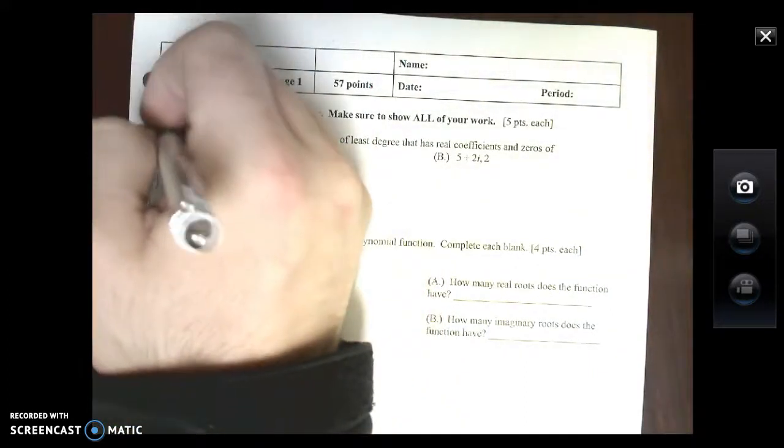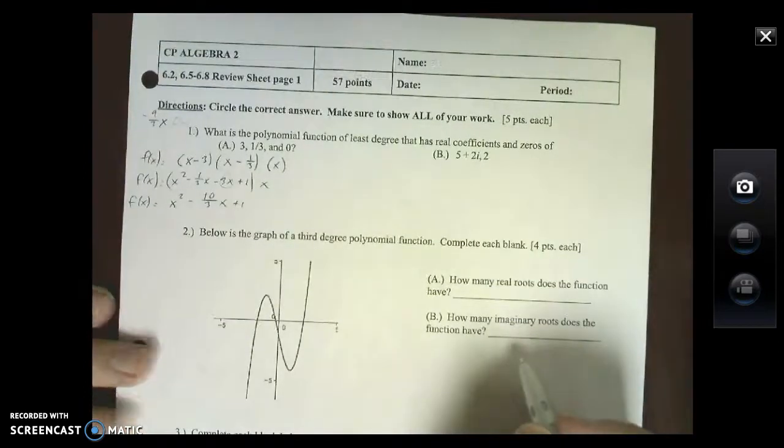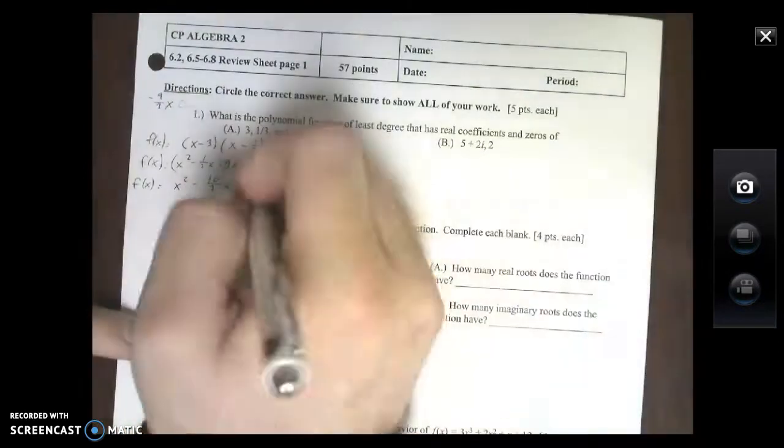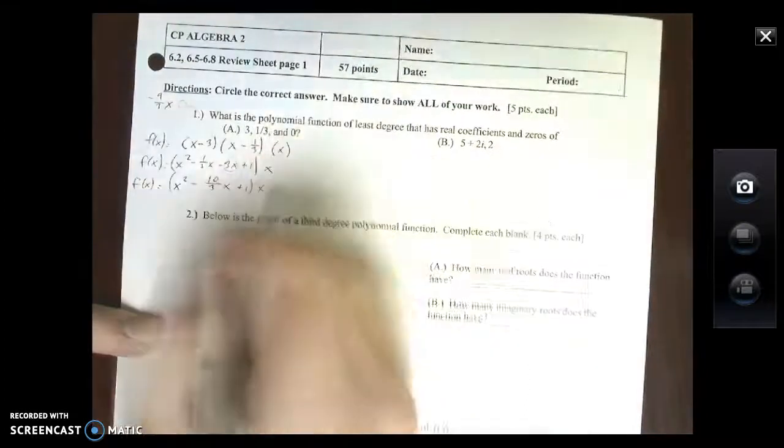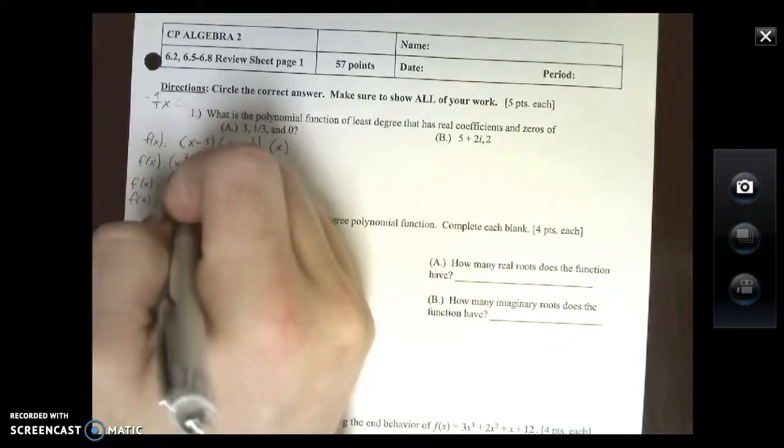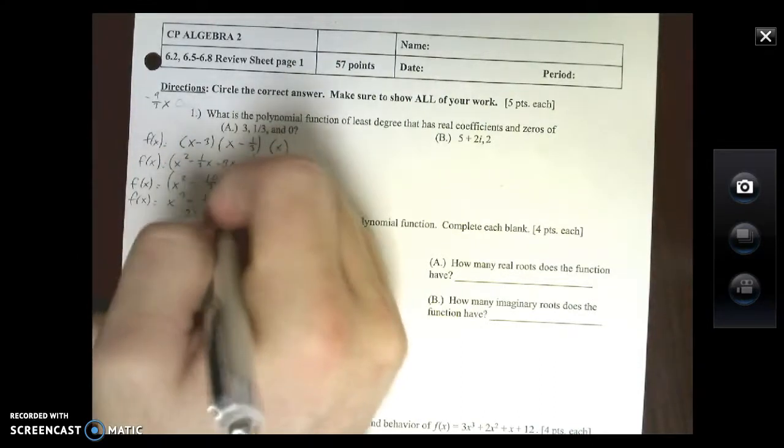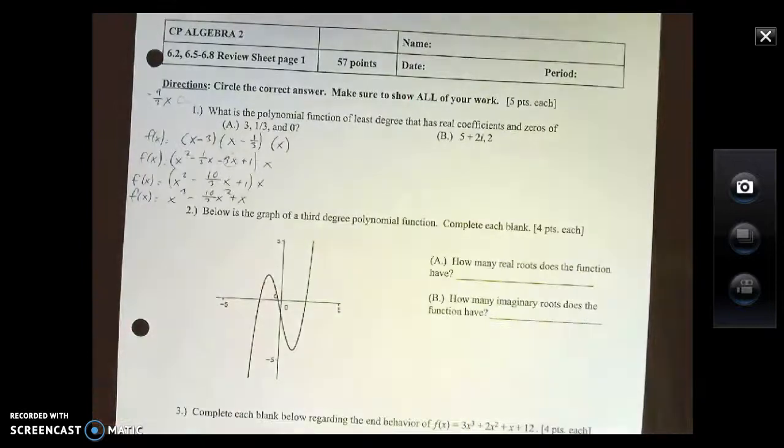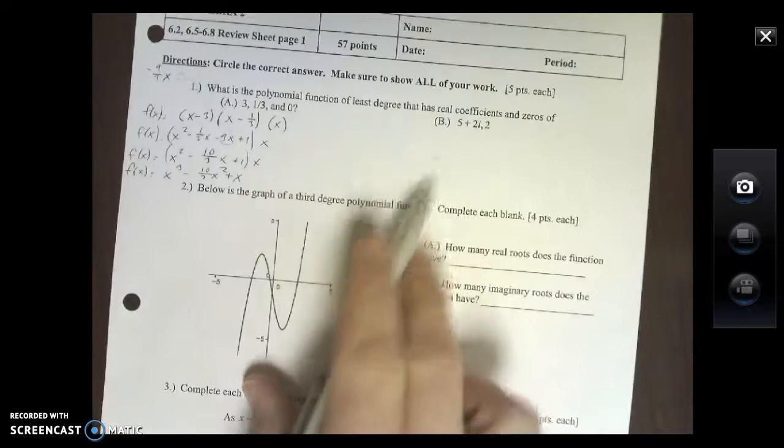I just converted this to negative 9/3 X and then you add them, negative 10/3, and all of that being multiplied by X. Now I can multiply this through: X cubed minus 10/3 X squared plus X. And you're in good shape.